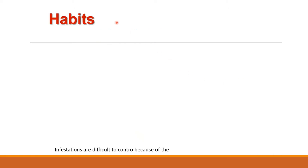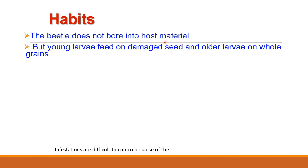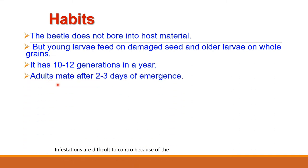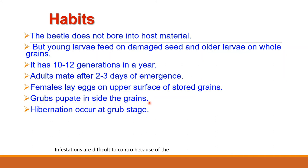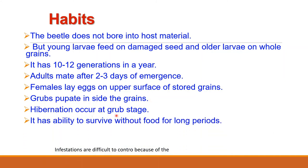The adult beetle does not bore into host material — it is the larva which feeds on the grains. Young larvae feed on damaged seeds or grains and older larvae feed on whole grains. Adults mate after 2-3 days of emergence and females lay eggs on the upper surface of stored grains. Trogoderma granarium has 10-12 generations in a year. The grubs pupate inside the grains and hibernation occurs at the grub stage. This pest can survive without food for a long period, making infestations difficult to control. It prefers dry conditions and low moisture food.